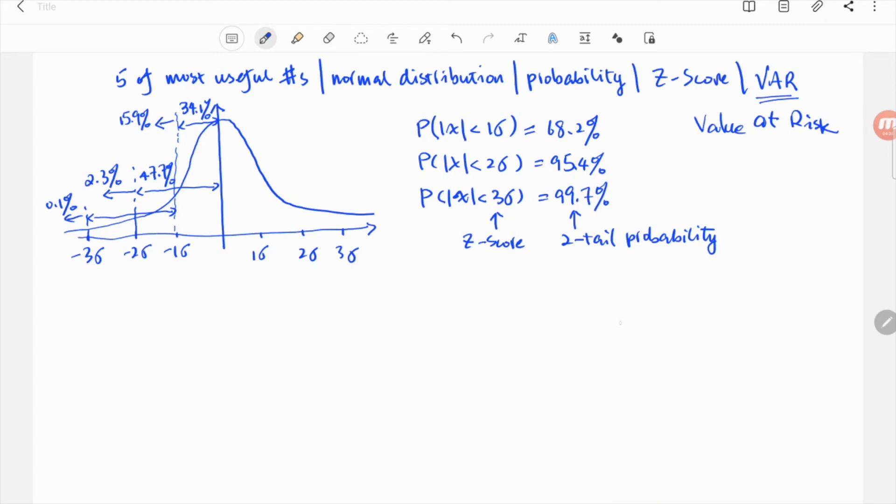With those one-tail probabilities in mind, it's straightforward to understand the so-called VAR, value at risk. You may often hear 195 or 1 at 95%, and 199 or 1 at 99%. What does it all mean?